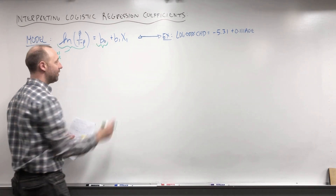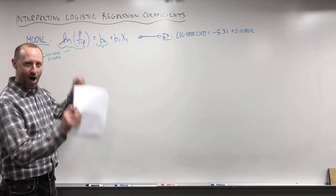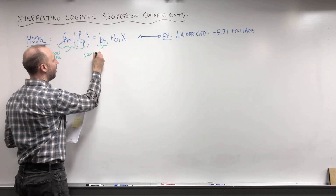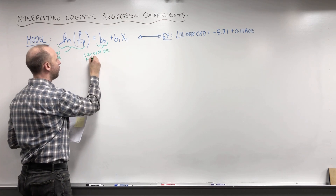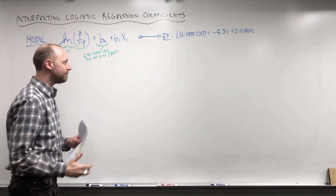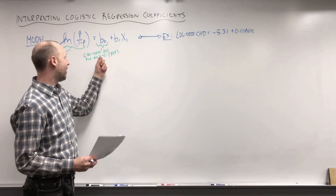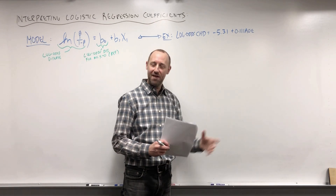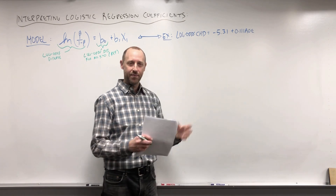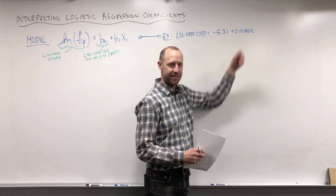The interpretation of B0, or the intercept term — generically, this is the y value when all x are zero. So we think of this as the log odds of disease for all x equals zero, in other words, for the reference. The direct interpretation in our example would be: negative 5.31 is the log odds of coronary heart disease for someone whose age is zero. That doesn't have a meaningful interpretation. As we discussed in linear regression, the intercept does not always have a meaningful interpretation. We can do things like center the age variable if we want to give it one.